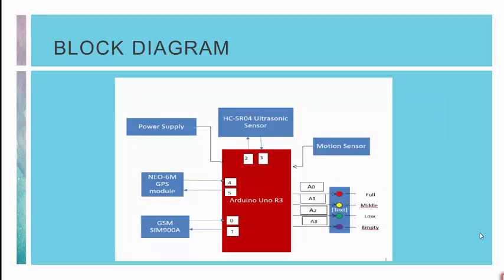This is the block diagram of our project. The power supply connects to the Arduino. The Neo6M GPS module connects to pin 4 of Arduino, and pin 5 of Arduino connects back to the GPS module. The GSM SIM900A connects to pin 0 of Arduino, and pin 1 connects to the GSM. The HC-SR04 ultrasonic sensor connects to pin 3 of Arduino, and pin 2 connects to the ultrasonic sensor. The motion sensor is also connected to Arduino Uno.